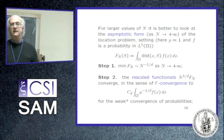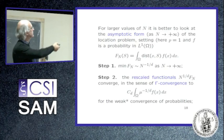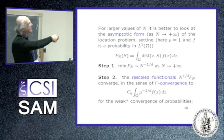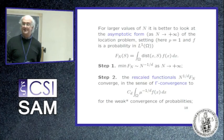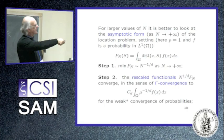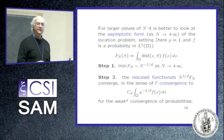Step number one consists in computing the speed of vanishing, and this is possible. A small computation shows that this minimum goes to zero with speed n to the power minus one over d, where d is the dimension of the ambient space. Then you normalize — you rescale your function by multiplying by the inverse of this factor, so the new rescaled function does not tend to zero anymore.